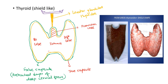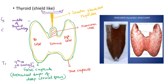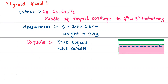The thyroid gland extends from the middle of the thyroid cartilage of the larynx to the fourth or fifth tracheal ring. It actually lies from C5 to T1 vertebra — that is C5, C6, C7, and T1. Coming to the measurements, the thyroid gland is approximately 5 by 2.5 by 2.5 centimeters and weighs about 25 grams.